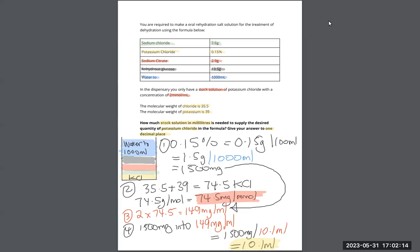So what this formula basically means is that you've got 2.6 grams of sodium chloride, 0.15% of potassium chloride, 2.9 grams of sodium citrate, and 13.5 grams of anhydrous glucose. That's all in one pot, it's all highlighted and coded. Then after that, water is added to a thousand milliliters. So that's what that means.